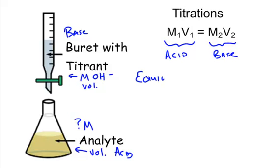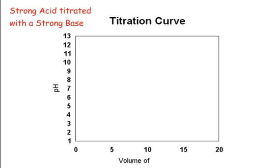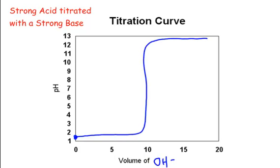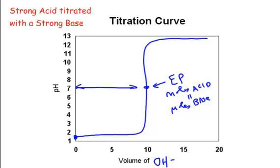You need to know four different titration curves. The first is a strong acid titrated with a strong base. Starting with a strong acid means a very low pH. As you add hydroxide, pH slowly rises then skyrockets up. Right in the middle is the equivalence point — where moles of acid equal moles of base. For a strong acid titrated with a strong base, the equivalence point is right at pH 7, because H+ + OH- gives water, and you're fully neutralized.